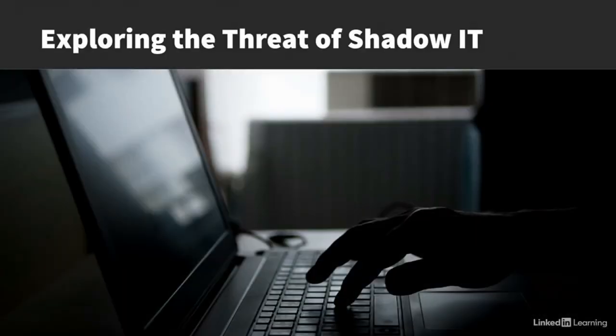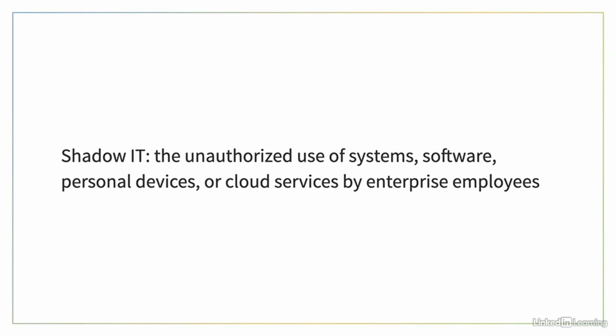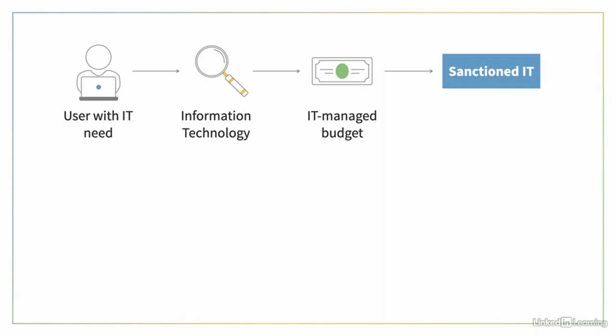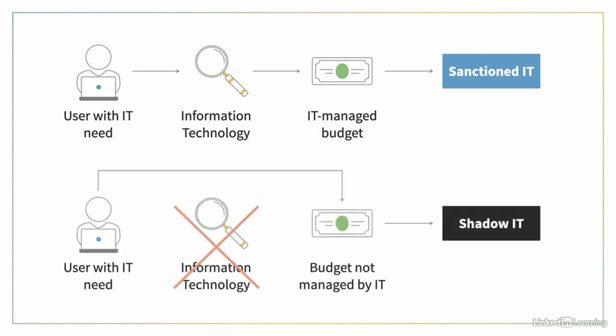Most of the dangers on the cybersecurity threat landscape come from malicious actors outside of your organization. Shadow IT is different, though, because this threat comes from within your organization, and many times it's not malicious. Shadow IT refers to the unauthorized use of systems, software, personal devices, or cloud services by enterprise employees. To best manage and secure IT systems, all technology purchases should be approved and budgeted by a shared services IT function. But users will sometimes go around IT and purchase technology with their own budget — this unsanctioned and often unmanaged technology becomes part of the Shadow IT in the enterprise.